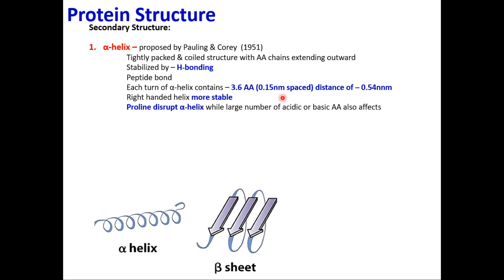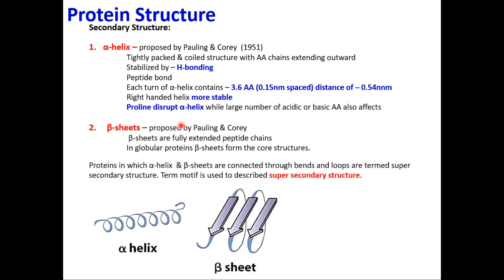In the alpha helix, the distance between one amino acid and the next is 0.15 nanometers; the distance per turn is 0.554 nanometers. The amino acid which can disrupt the alpha helix and beta sheet — a very important viva question — is proline. Proline will always disrupt alpha helix and beta sheets, along with some acidic and basic amino acids. Beta sheets form when amino acids stretch into an extended conformation instead of coiling into a helix — these extended structures are called beta sheets.